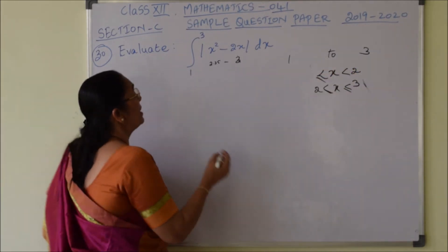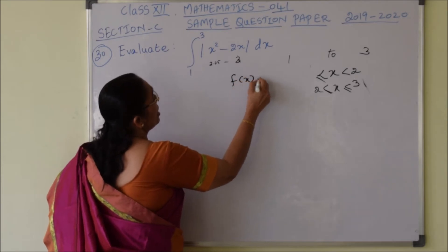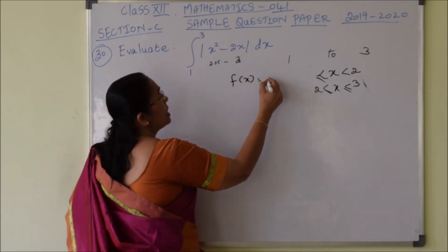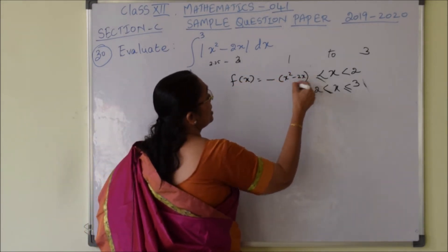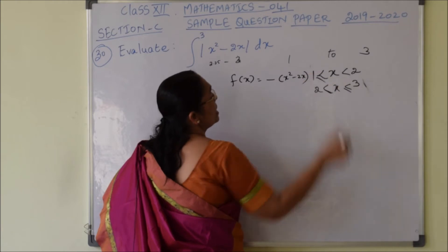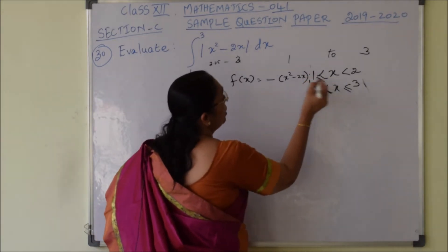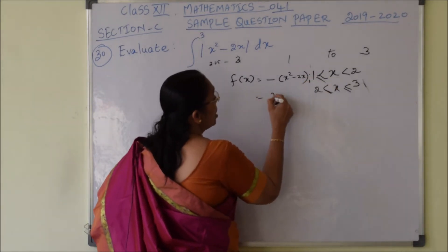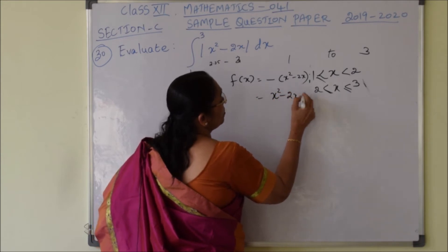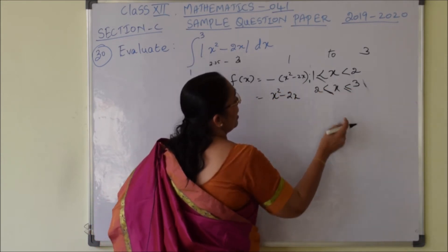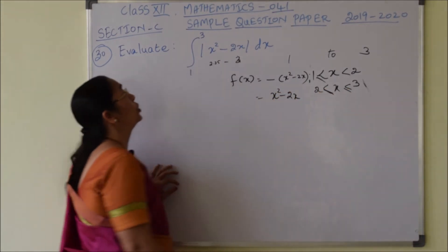So we write the given function as: f(x) equals negative of (x squared minus 2x) when x is in [1, 2], and positive of (x squared minus 2x) when x is in [2, 3].